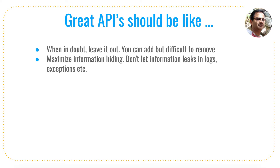The next one is: maximize information hiding — don't let information leak in logs or exceptions. Sometimes you see an API where an exception message reveals the database name or field names, making it easy for hackers to understand your database structure. You should not let the API leak that information. Similarly, when writing logs, make sure you are not writing user information or user email into the logs. This is like PII compliance — that is what I mean by maximizing information hiding.